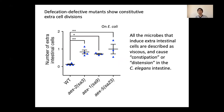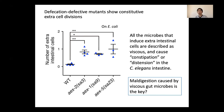In contrast, mutants defective for defecation, in which constipation occurs in the intestine, had extra intestinal cells in their embryos even on E. coli. We also noticed that the microbes that induce extra intestinal cells are described as viscous and cause constipation in the C. elegans intestine. So we came to assume that maldigestion caused by viscous gut microbes is the key to this developmental plasticity.